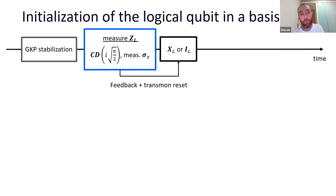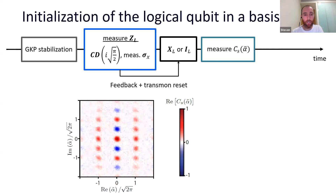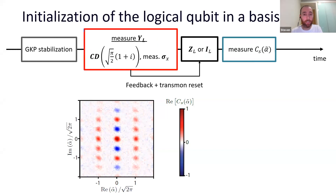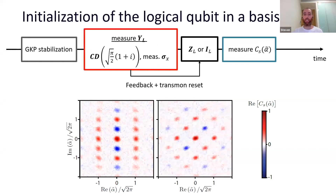For example, measuring logical Z with feedback prepares the logical one state — in the characteristic function, we see a minus one value where Z is, confirming deterministic preparation of the one state by applying the X gate when we get the zero result. We can also replace this with a measurement of logical Y to get a Y eigenstate where the logical Y point shows a minus one value.